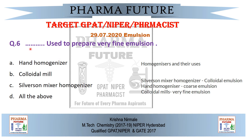Question 6 — today's last question: Which of the following instruments is used to prepare a very fine emulsion? Option A: hand homogenizer. Option B: colloidal mill. Option C: Silverson mixture homogenizer. Option D: all of the above. The Silverson mixture homogenizer is used for colloidal emulsions. The hand homogenizer is used to prepare coarse emulsions. The colloidal mill is used for very fine emulsions. Therefore, the correct answer is Option B: colloidal mill.